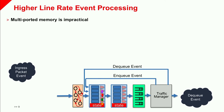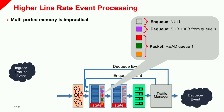Let's say we wanted to compute the queue size — maintain a register in our pipeline that maintains the queue size of all the egress queues. On a particular clock cycle, maybe a packet wants to read the size of queue one to make forwarding decisions, and the dequeue event that fired wants to subtract 100 bytes from queue zero. How do we handle both of these read-modify-write operations without resorting to multiported memory?